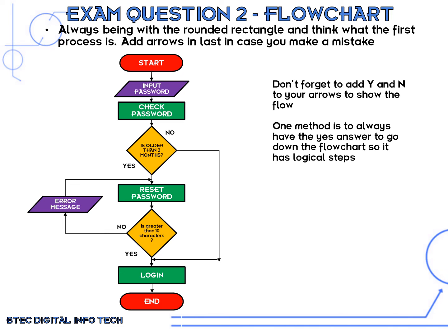This flowchart is a little more complicated than the previous one. We've got our start and end as before, but this time we've added some inputs. At the beginning, we input the password — the system won't work without inputting something. Once the password is entered, we check whether it's older than three months. That's a process: check the password. Then we decide: is it older than three months? If yes, we reset the password. If no, we go directly to log in.